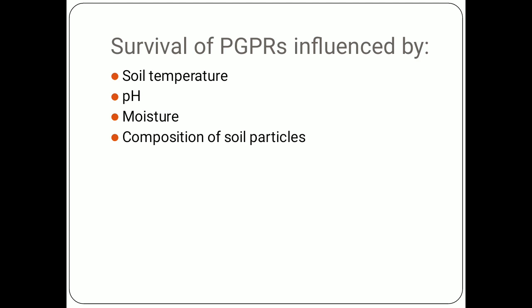PGPRs are influenced by several factors, the first being soil conditions. They are influenced by soil temperature, soil pH, the amount of humidity or moisture in the soil, and the composition of soil particles — whether the soil has more sandy particles, clay particles, loamy soil, or silt. Based on these particles, the type and number of PGPRs will vary.